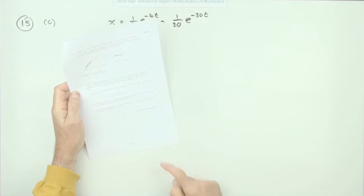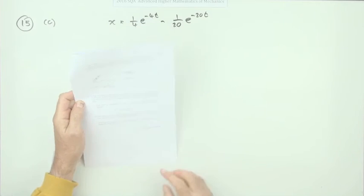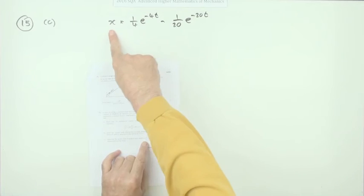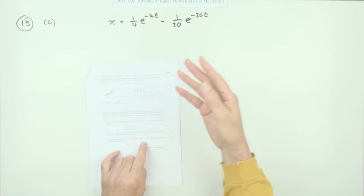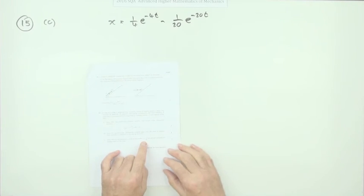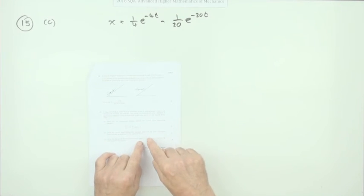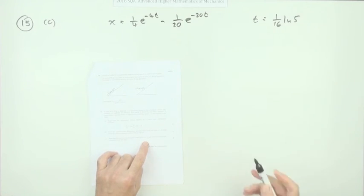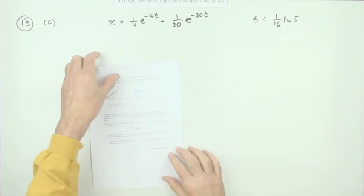The last part is three marks: show that the acceleration is zero when t = (1/16)ln5, and find the displacement at that time. You can approach this by differentiating the expression for x twice to get the acceleration, then either substituting that value of t to verify it gives zero, or solving the acceleration equation equal to zero.